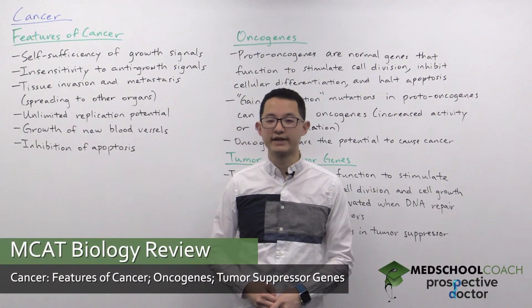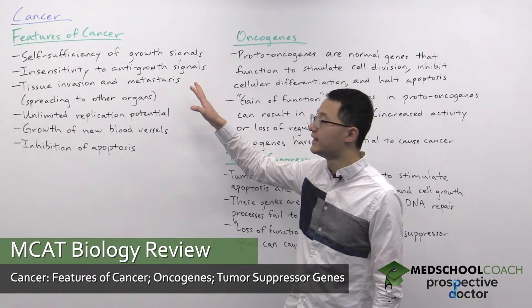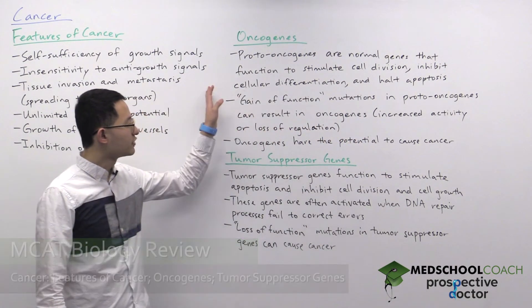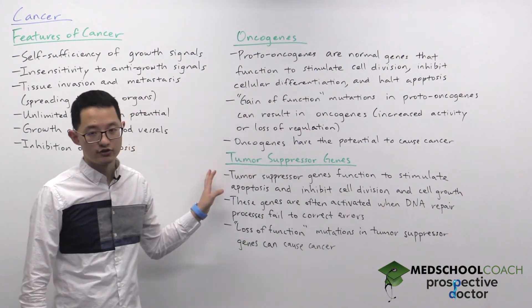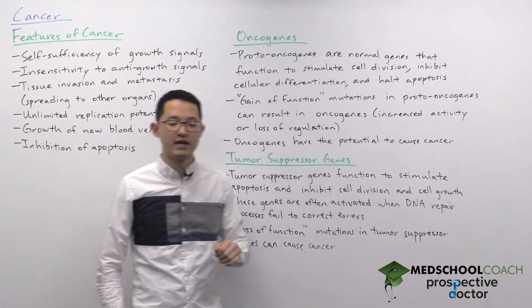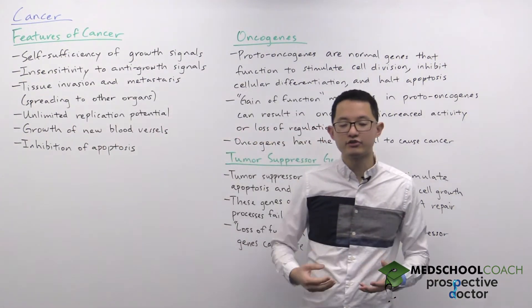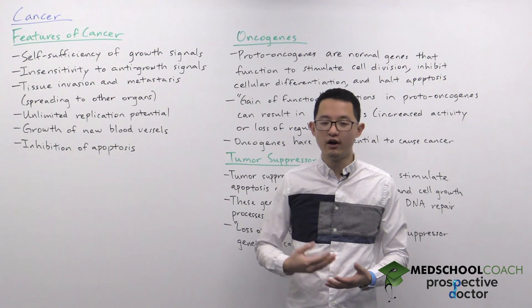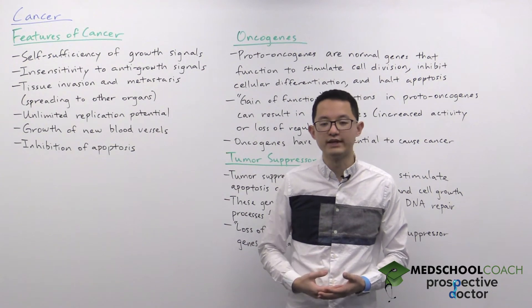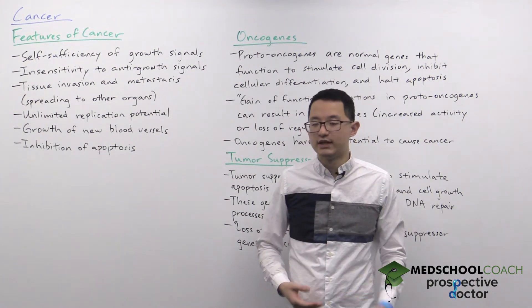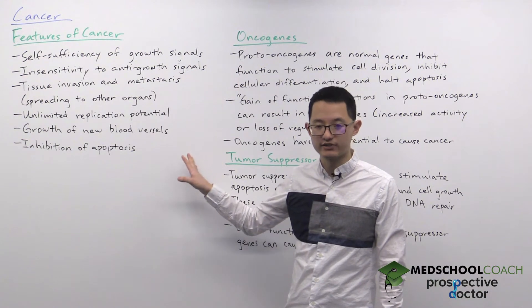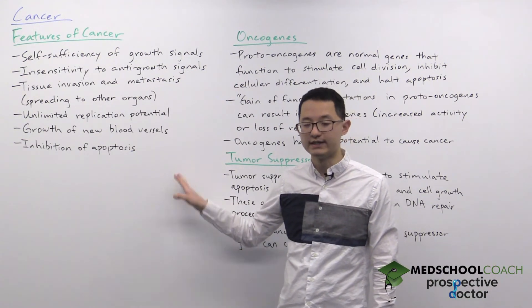In this video we're going to go over cancer. This is going to include a discussion on the features of cancer as well as oncogenes and tumor suppressor genes. When it comes to cancer you usually think of these cells as cells that grow uncontrollably, and that's correct. However, there are additional features of cancer cells that have now been defined.